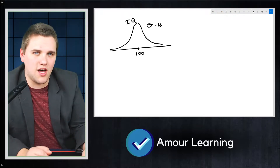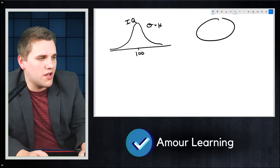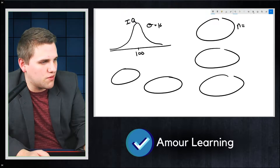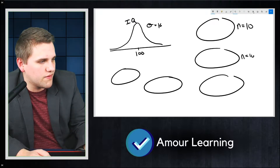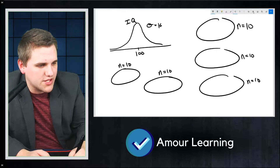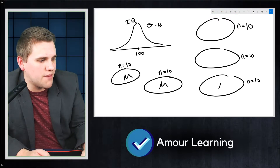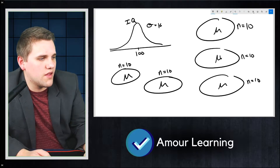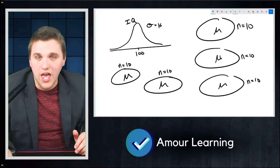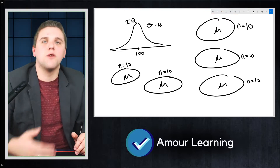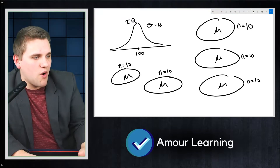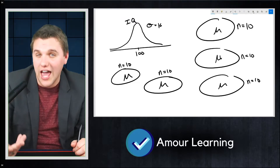Let me remind you what the central limit theorem states. If we polled a bunch of different samples where each of these samples has a total of 10 people, the central limit theorem says that the averages of all these samples — if we took the average of all of these samples and created a histogram for those averages — we would get more or less a normal distribution. If I were to plot these sample averages on a distribution, it would look a lot like a bell curve.